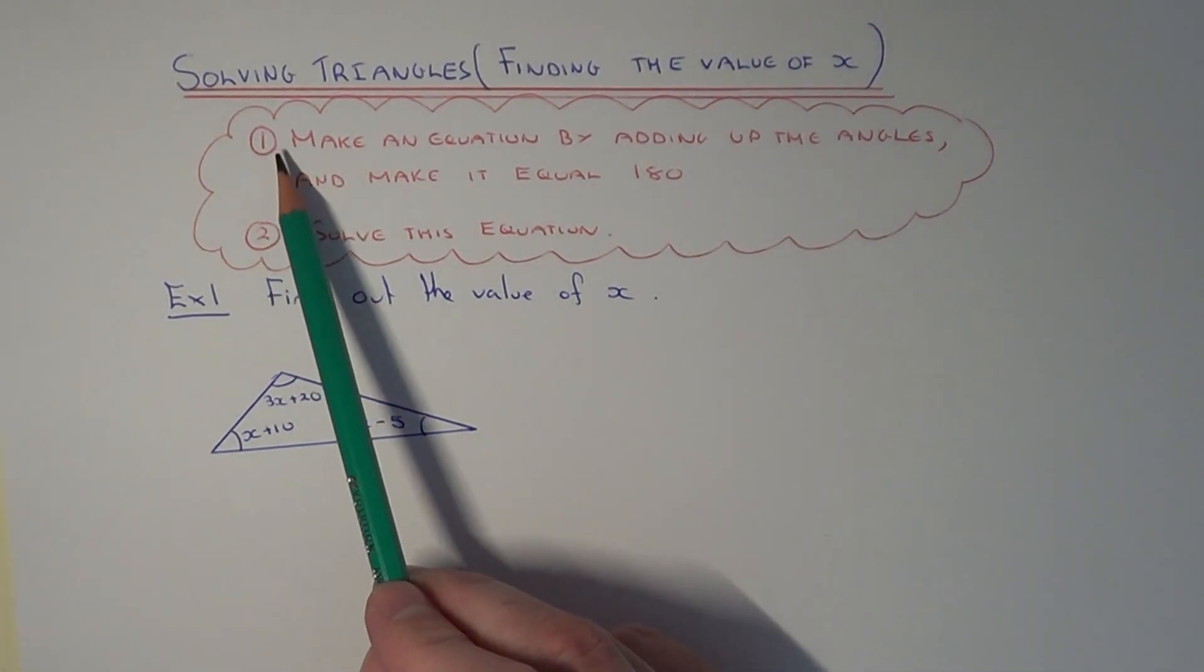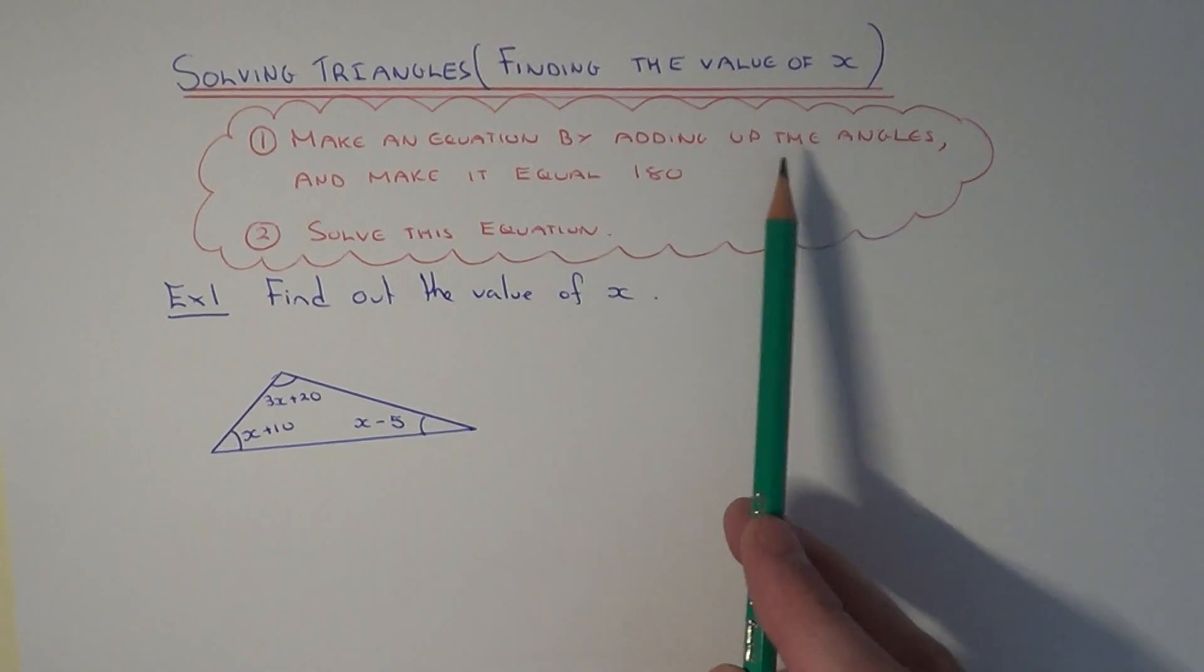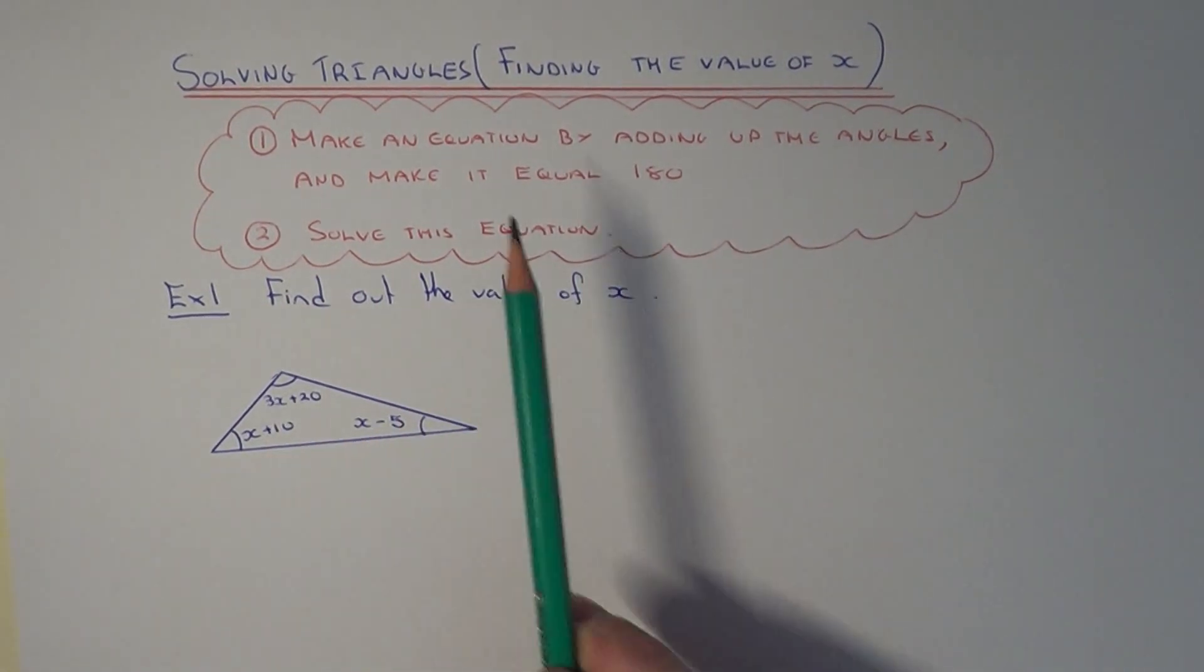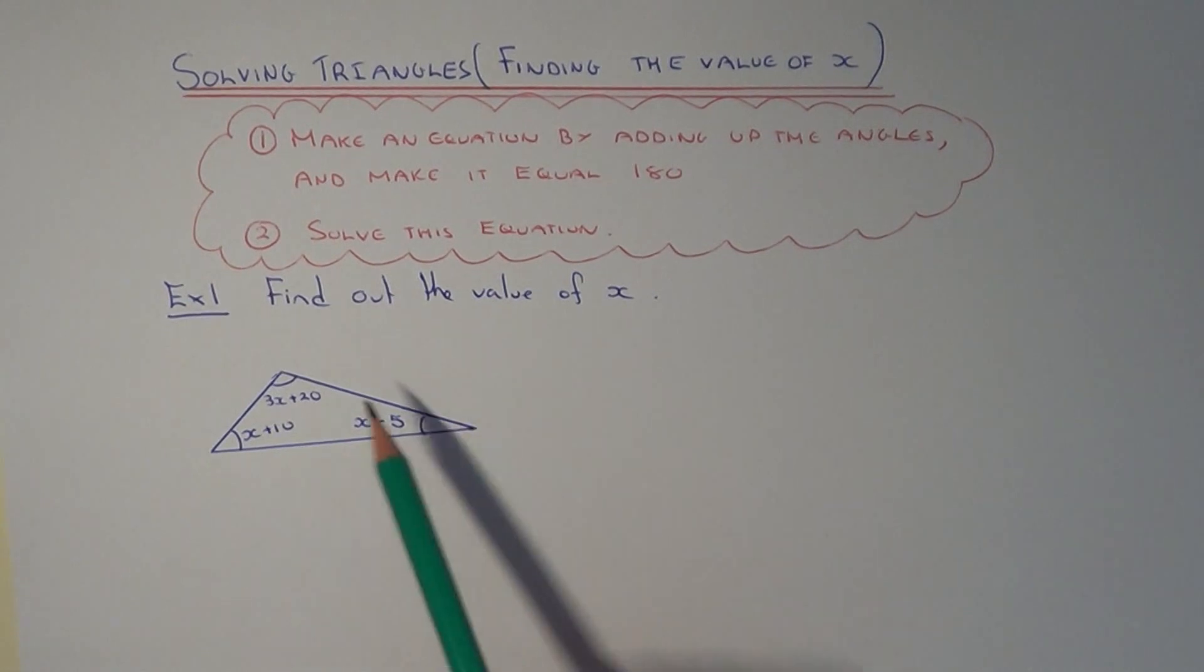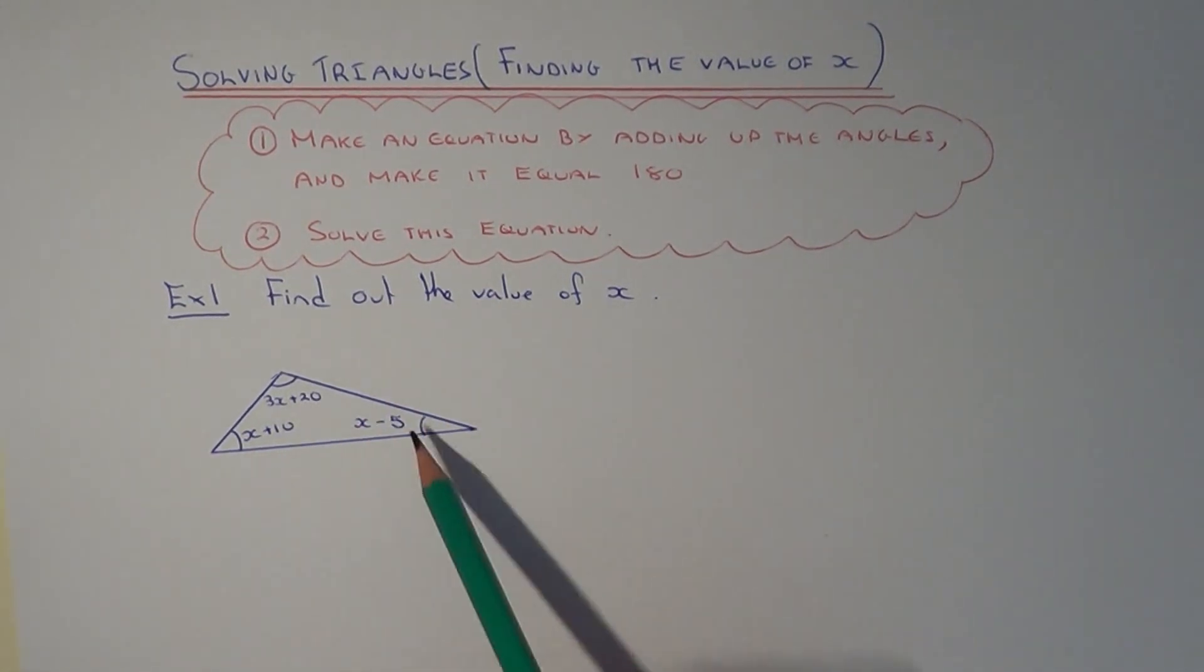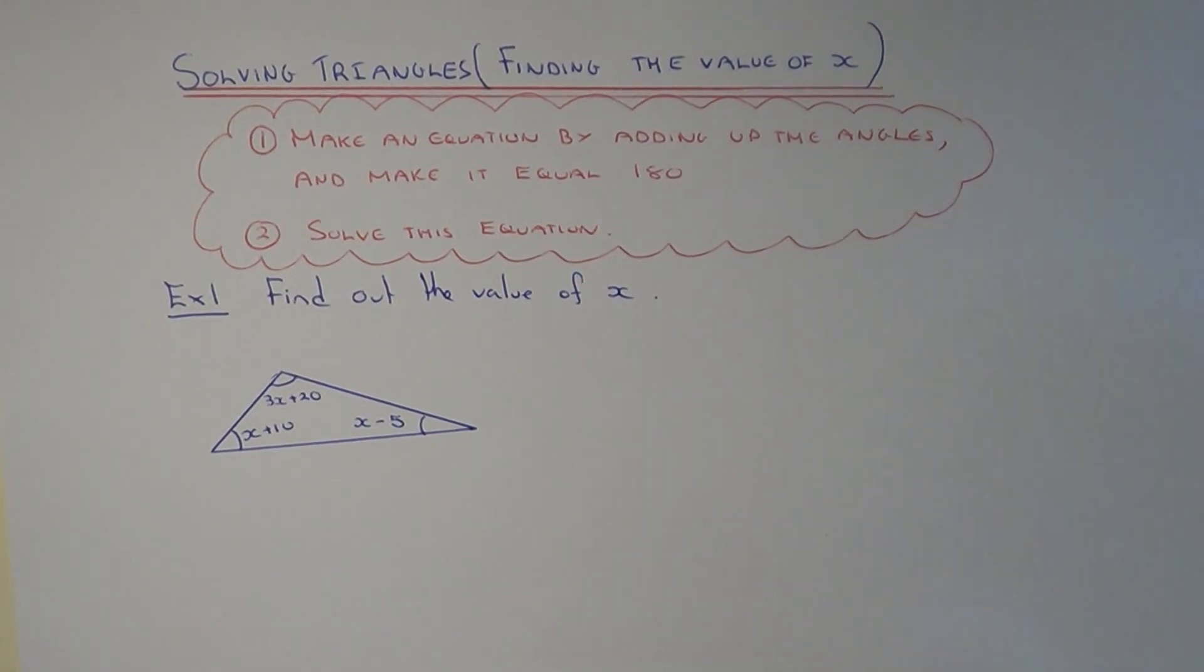The way you do this is first, you need to make an equation by adding up the given angles and make the equation equal to 180 because the angles in a triangle add up to 180. Once you have this equation, you can solve it using your normal method to work out the value of x.